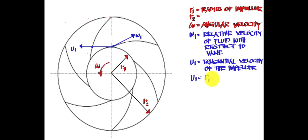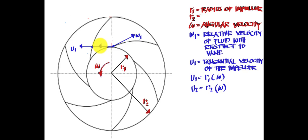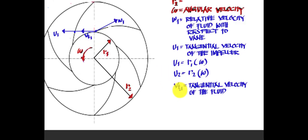The tangential velocity u1 equals radius one times the angular velocity. At point two, the tangential velocity discharging outside the vane is u2, equal to radius two times the angular velocity. Next, we have the tangential velocity of the fluid: Vt1 at the inlet and Vt2 when the fluid is going out from the vane or impeller.